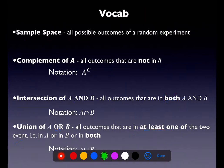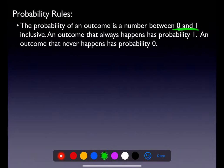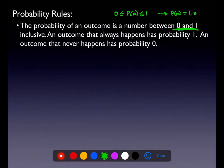Moving along to probability rules: the probability of an outcome is always a number between 0 and 1. I will repeat this forever because we will make that error time and time again. If you tell me you got a probability of 1.35, that's false — it can't be larger than 1. An outcome that always happens has a probability of 1, and an outcome that never happens has a probability of 0.